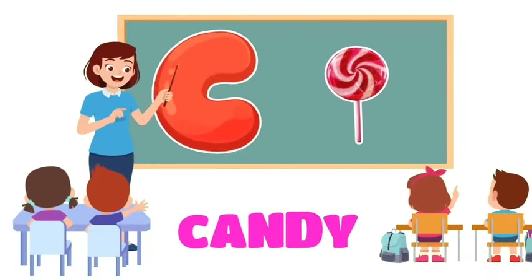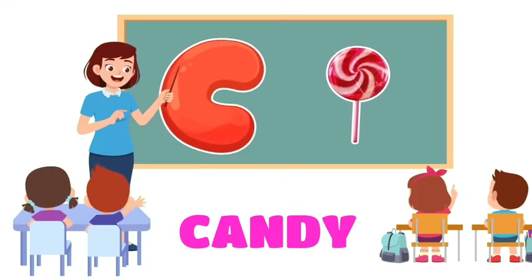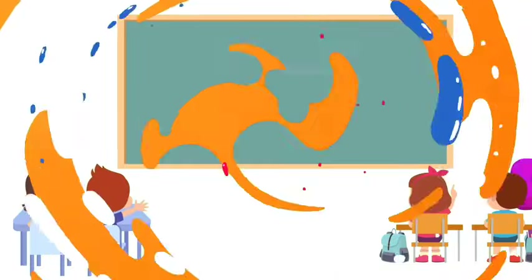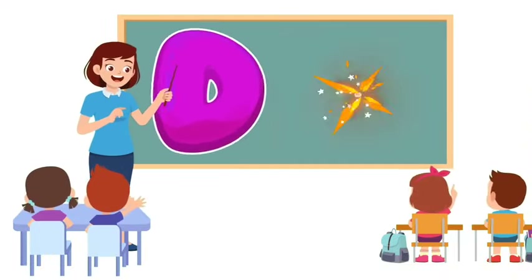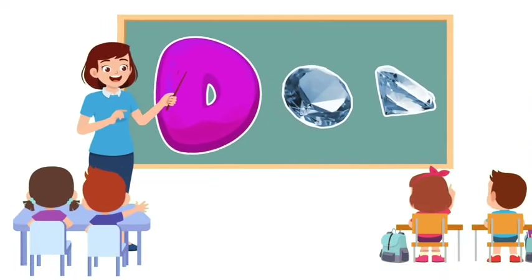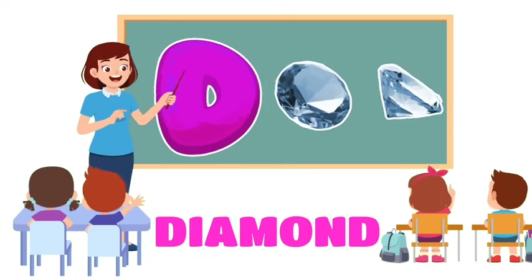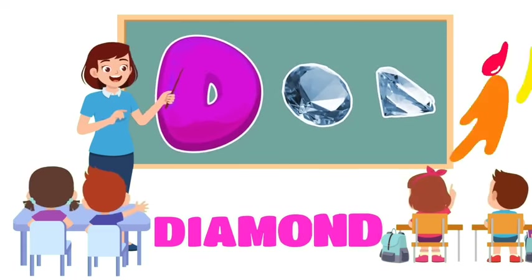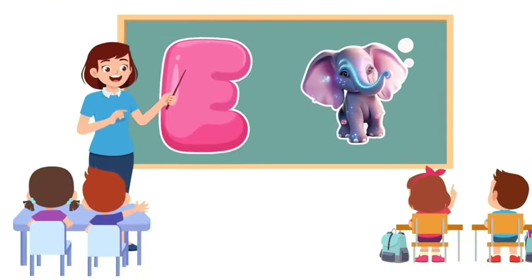C is for Candy. C, c, candy. C, c, candy. C, candy. D is for Diamond. D, d, diamond. D, d, diamond. D, diamond.